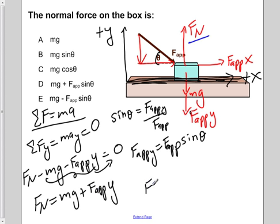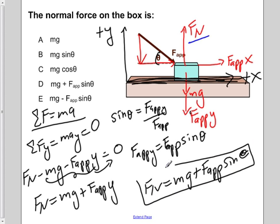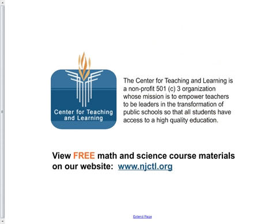So, from here, we can see that our normal force is equal to mg plus F applied times sine of theta. Now, from this, we go to our choices here, and we see the answer choice that corresponds to this is answer D. The normal force is mg plus the applied force times the sine of theta.